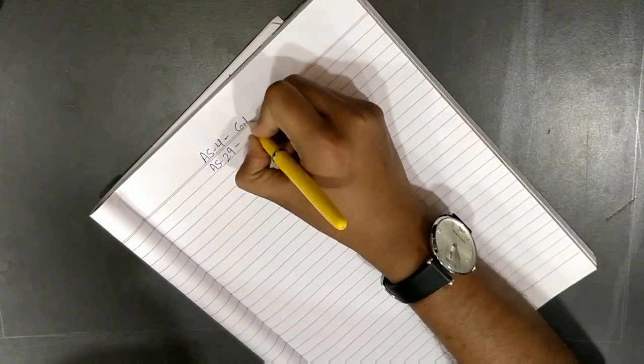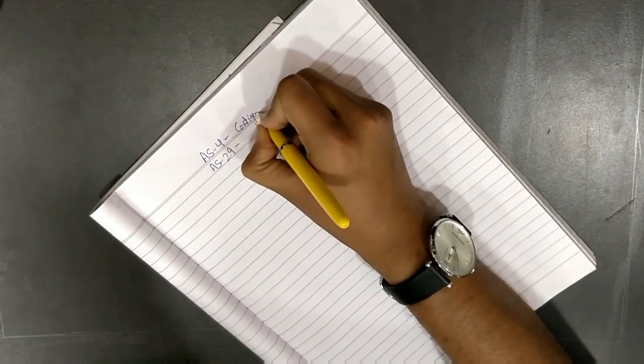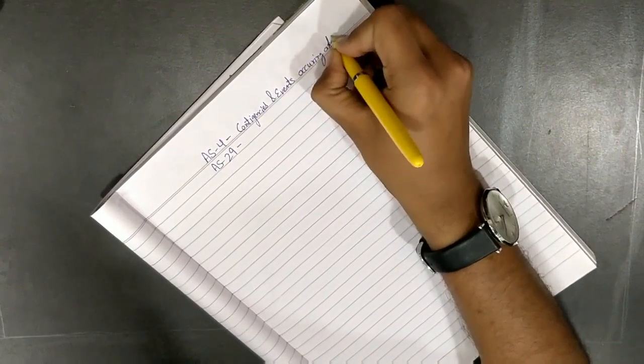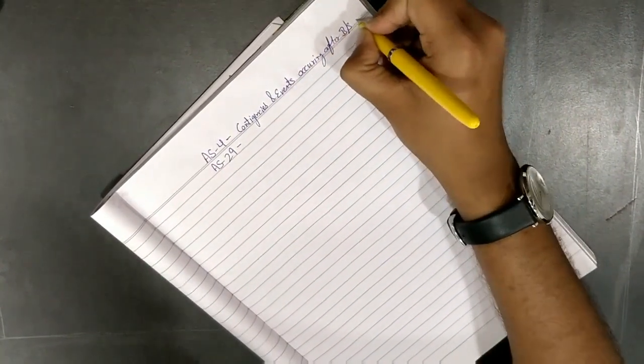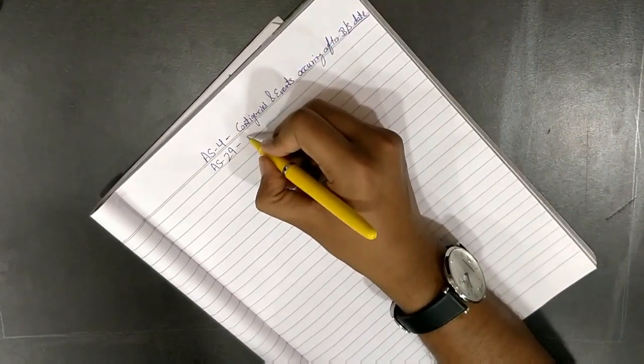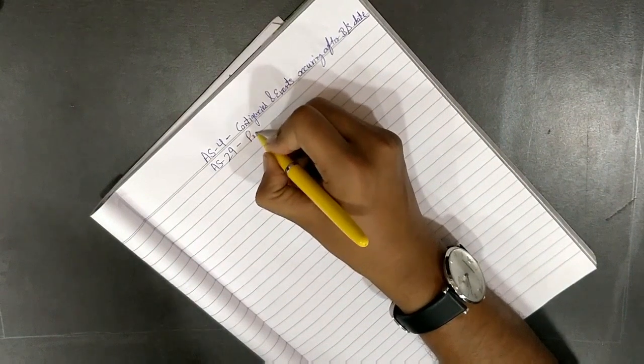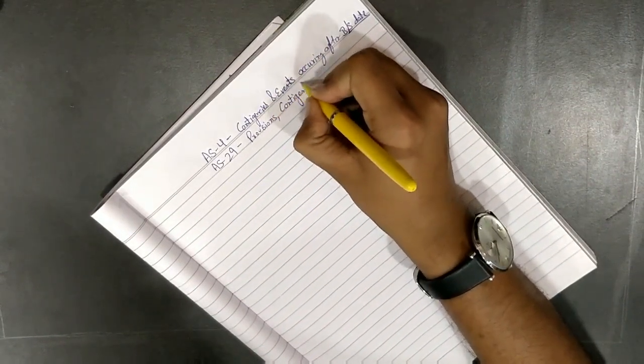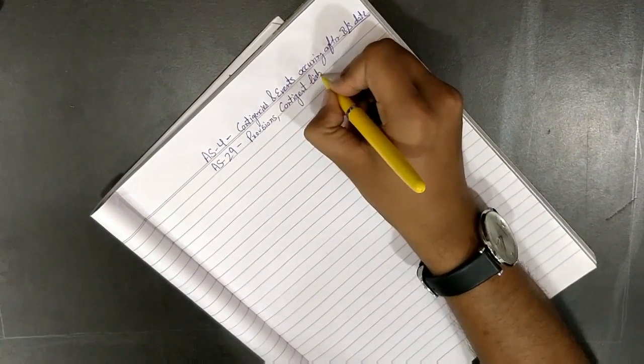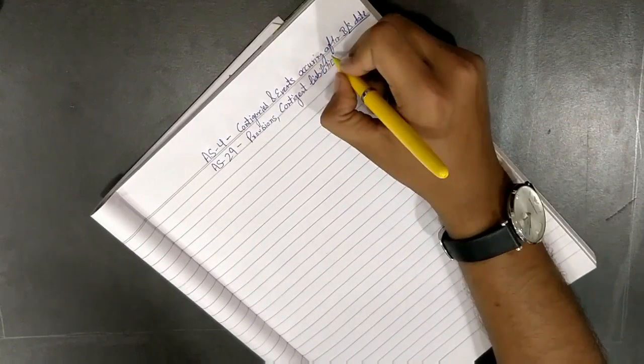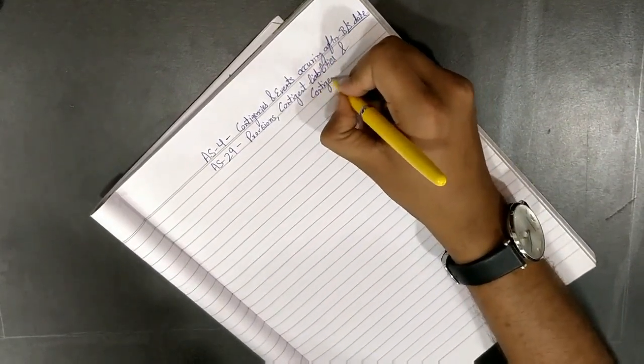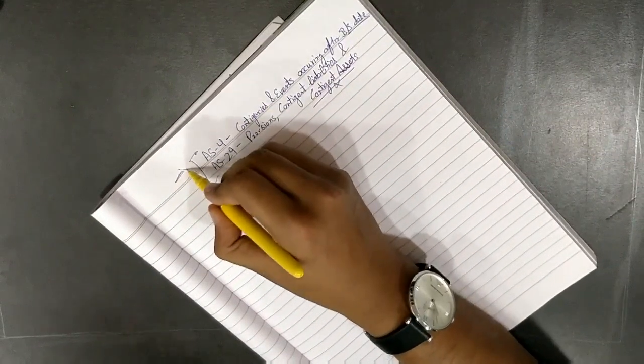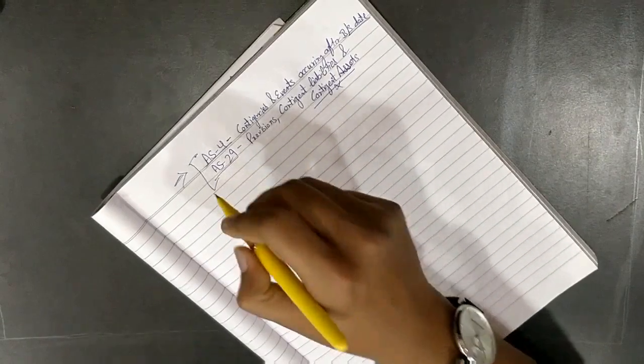AS4 is Contingencies and Events Occurring After Balance Sheet Date. The name of AS29 is Provisions, Contingent Liabilities, and Contingent Assets. AS4, AS29, let's see.